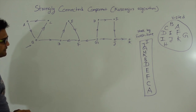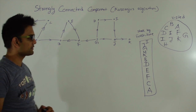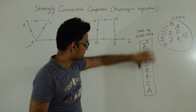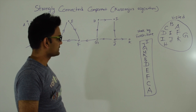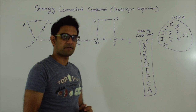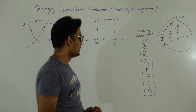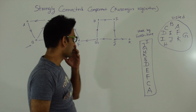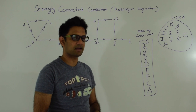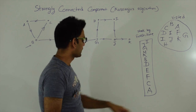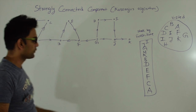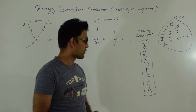So this is the first pass of the algorithm. We have a stack in which the vertices are ordered by finish time in decreasing order — the vertex which finished last, I, is at the top of the stack, and the vertex which finished first, A, is at the bottom of the stack.